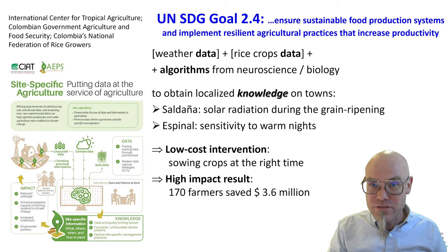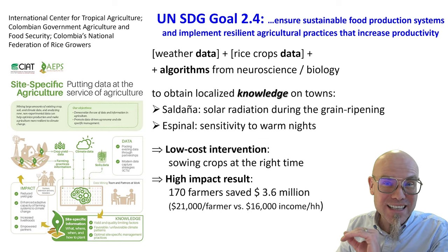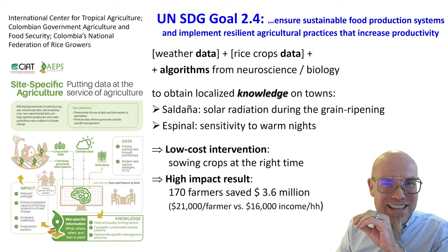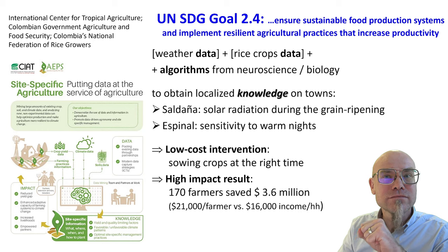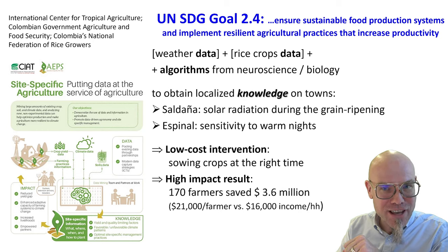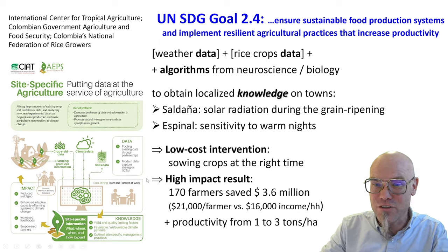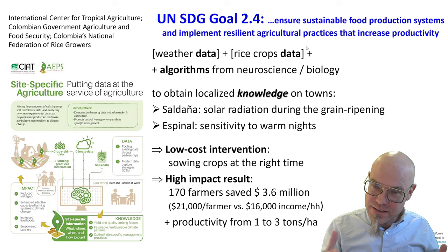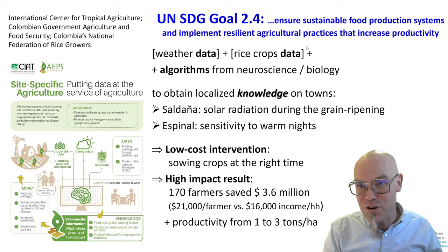170 farmers saved $3.6 million — that comes down to more than $20,000 per farmer in a country where the average household income is $16,000. So they made more from this information and knowledge intervention than an average family in Colombia would make. They tripled production — talking about fulfilling the goal of agricultural practices that increase productivity.